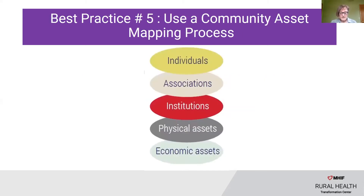Best practice number five is to use a community asset mapping process to identify the positive attributes and resources available in the community. It helps to identify connections between individuals, between individuals and organizations, and between organizations. Asset mapping serves two functions: one, it helps to discover expected and unexpected key stakeholders to engage in a population health initiative; two, it initiates a process that a community can ultimately use to mobilize identified resources and help solve its own health problems. Communities can leverage available electronic health record data to map and target individuals at higher risk for heart disease due to high blood pressure, diabetes, obesity, or other conditions, then employ asset mapping to identify available community resources and any existing gaps.